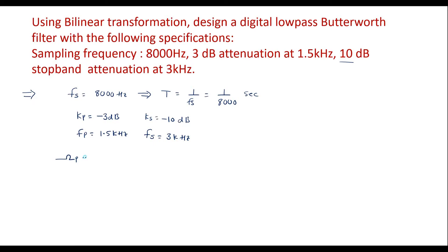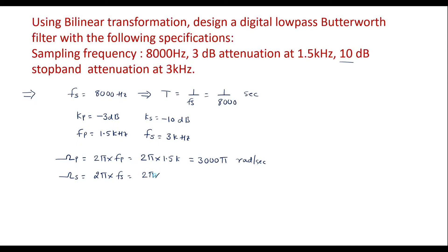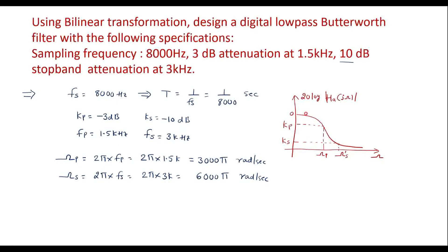The first thing is to convert the frequencies given in Hertz into radians per second. The pass band frequency omega_p equals 2π × FP = 2π × 1.5k = 3000π radians per second. Similarly, the stop band frequency omega_s = 2π × FS = 2π × 3k = 6000π radians per second. These omega_p and omega_s are the analog frequencies in radians per second.